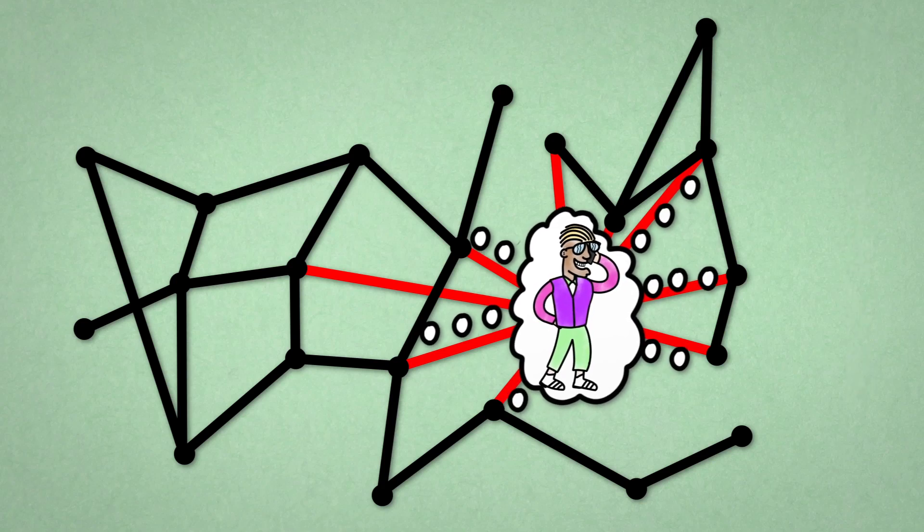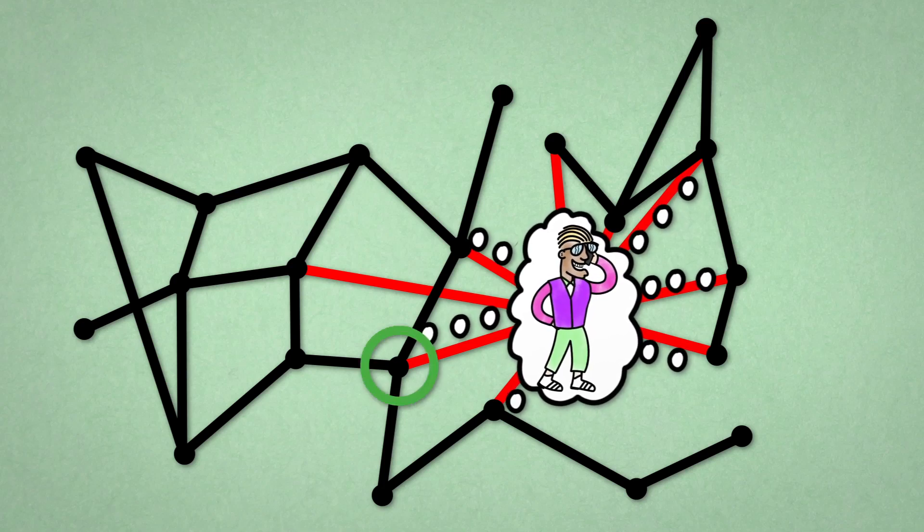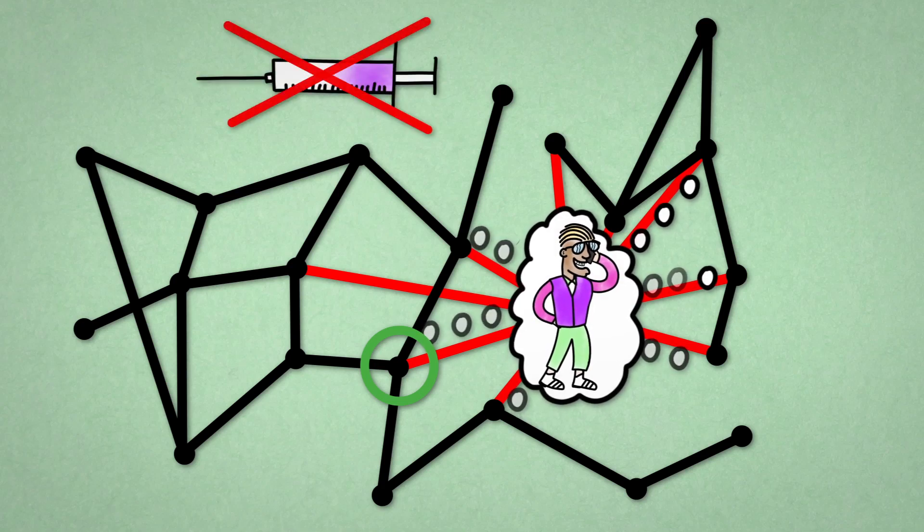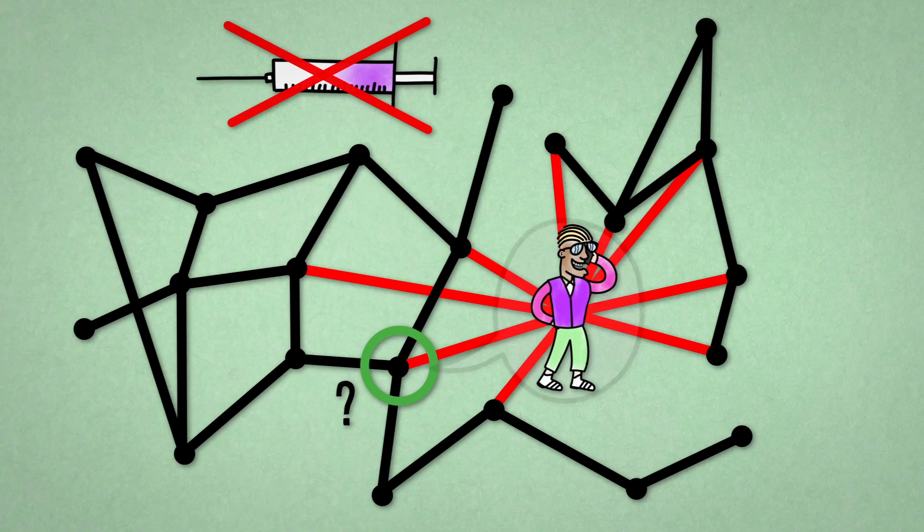This friendship paradox can even be put to use in combating disease. Start by selecting random people from the population that you want to protect. But don't vaccinate those people. Instead, ask them to name one of their contacts.